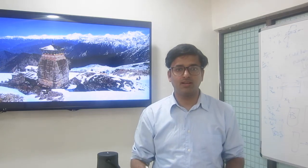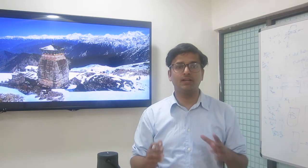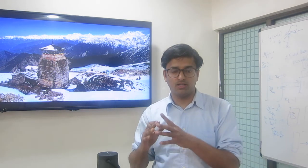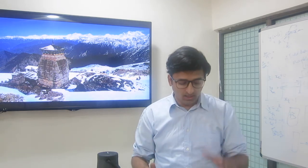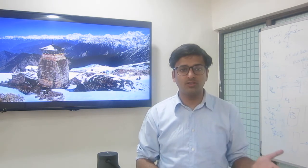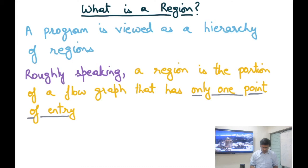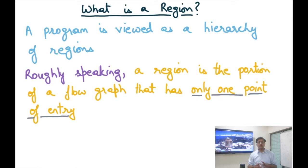Last time we talked about region-based analysis and how it can help integrate a data flow analysis with more precise symbolic analyses for internal two regions. Now before we go any further we need to understand what a region means and it needs to be defined more formally. Recall that a program is viewed as a hierarchy of regions, and roughly speaking a region is the portion of a flow graph that has only one point of entry.